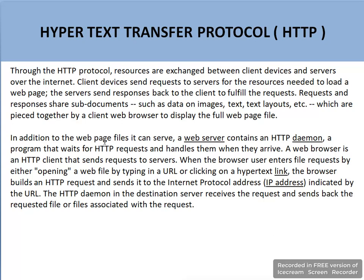A web server contains an HTTP daemon, a program that waits for HTTP requests and handles them when they arrive. A web browser is an HTTP client that sends requests to servers. When the browser user enters a file request by opening a web page — by typing in a URL or clicking on a hypertext link — the browser builds an HTTP request and sends it to the IP address indicated by the URL. The HTTP daemon in the destination server receives the request and sends back the requested files.